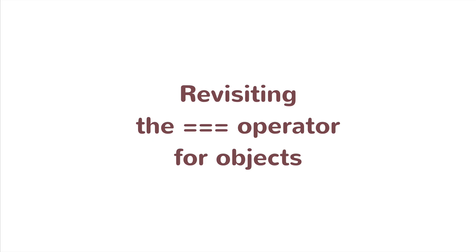Now I want to revisit the triple equals operator for objects. We've learned the equality operator, and we've learned that the triple equals is the more precise way of checking if two values are equal when they are primitives. Now how does the equality operator work in the case of objects? The way it works in JavaScript is similar to Java or C++, but I'm just gonna quickly demonstrate anyway.